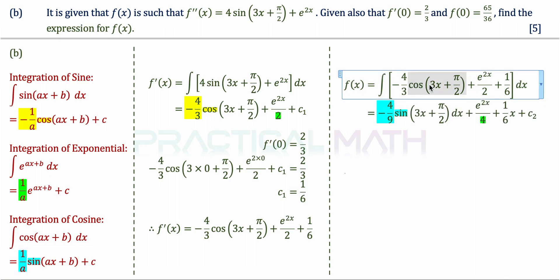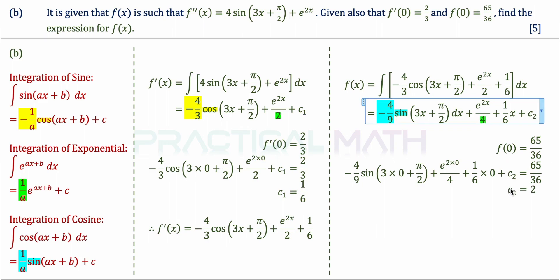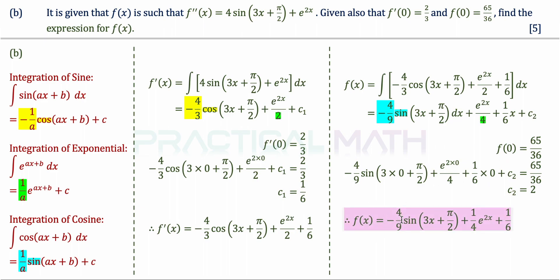Integrating f prime of x to get f of x: integrating cosine gives sine divided by the differentiation result of the angle — dividing by 3 again, so negative 4/3 divided by 3 gives negative 4 over 9. Integrating e to the power of 2x divided by 2 gives e to the power of 2x divided by 4. Integrating the constant 1/6 gives (1/6)x, plus c2. Substituting x = 0 and setting the expression equal to 65 over 36 gives c2 = 2. Replacing c2 back in, f(x) = negative 4/9 sin(3x + π/2) + 1/4 e to the power of 2x + (1/6)x + 2. That is the answer for part B.